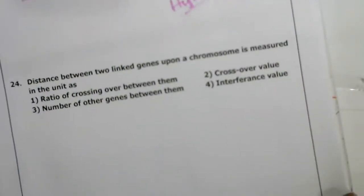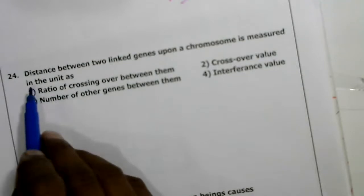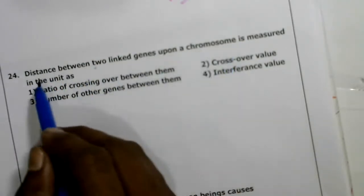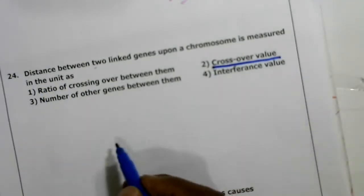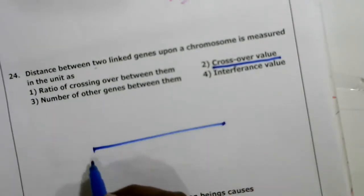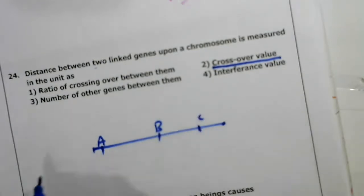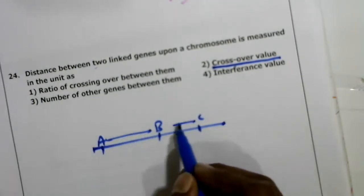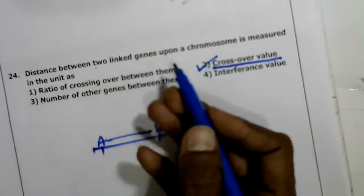Twenty-fourth question: the distance between two linked genes on a chromosome is measured in units of crossing over value. For example, on a chromosome the locations of genes A, B, and C are measured by the unit of crossing over — this was already discussed in the fifth question.